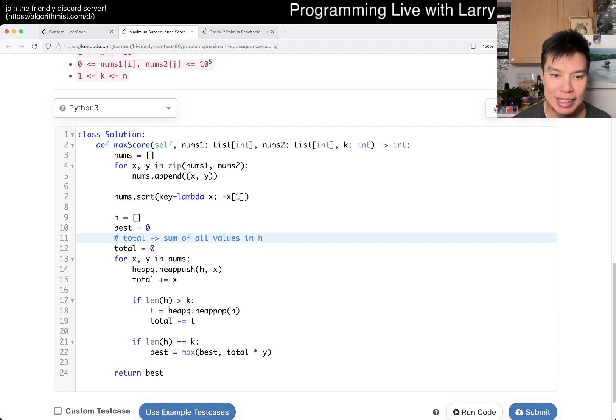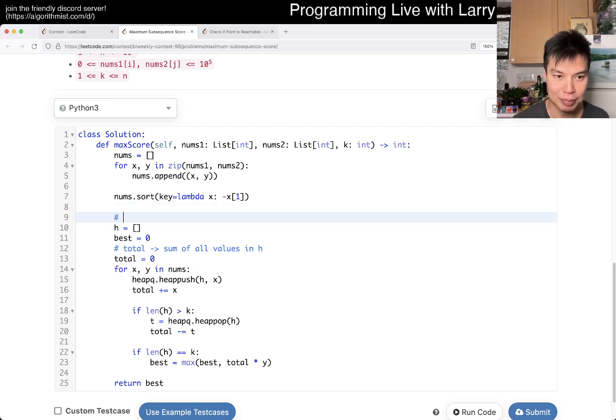So then here, when we see an X, and this is a min heap. Because whenever we have too many values, we want to remove the smallest value so that everything in the heap is going to be the K max value, right? So that's basically the idea there. Yeah, so we push in the heap. We add the sum of all values in H increased by X. And then if we have too many values, we pop it. We pop the smallest value, and then we subtract it from the total. Just trying to keep track of it. And then now, if we have at least K values, then we do total times the min value, which is Y. So yeah. So this is all the sum of the values in H and Y, and that's pretty much it. And then you just take the best of all of these after you have K values.